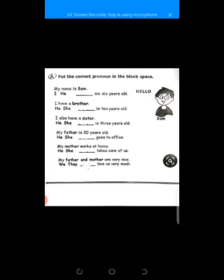My father is thirty years old. Dash goes to office. Father. Boy. He goes to office. My mother works at home. She. Dash. Oops. Dash takes care of us. Who takes care of us? Mother. Mother is a girl. What to use? He or she. She. Very well done. My father and mother are very nice. Dash love us very much. They love us very much or we love us very much. They love us very much. Very well done.